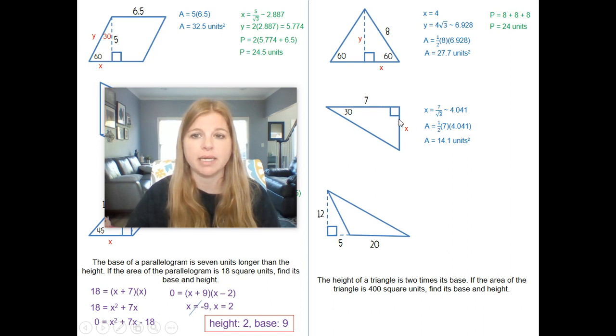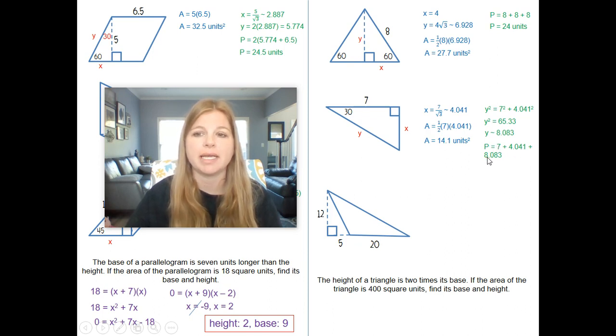Perimeter. So I know this is 7. I know this is 4.041. I can simply double it to get my hypotenuse. Or this is an example of where I could use the Pythagorean theorem. I could say, hey, this is 7. This is 4.041. Let me plug it in. Or I can just take this length of x and simply double it to get the hypotenuse, and I would get the same exact thing. And then for my perimeter, it's me simply adding up those three sides. 7 plus 4.041 plus that 8.083, and we get 19.1 units.